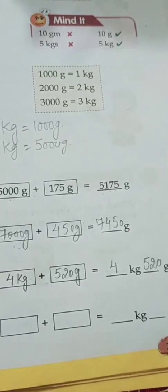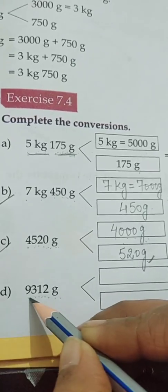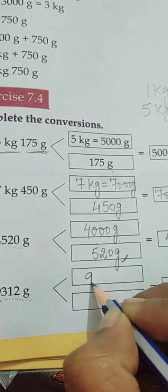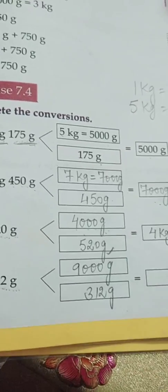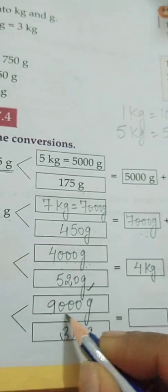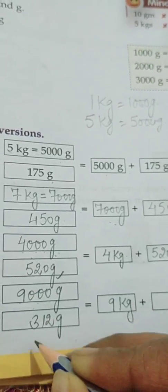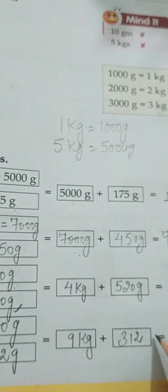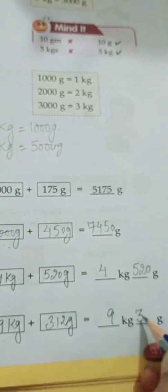The next is 9312 grams. In the same way, we break this into 9000 grams and 312 grams. 9000 grams means 9 kilograms. So the answer is written as 9 kilograms 312 grams.